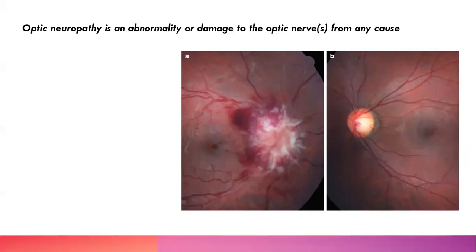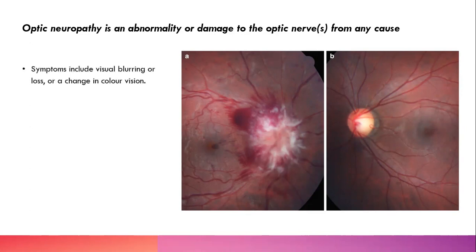The disc is indistinct — you can't really make it out. There's white material there and there's blood, so that disc is swollen. This is what really bad disc swelling looks like for optic disc edema. This person has right-sided, unilateral, severe optic disc edema. Many things can cause that.